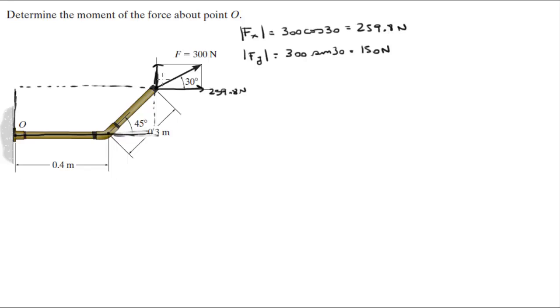Now the sum of the moments around O. First thing you need to do is get the magnitude of the lever arms. Now you know this is 0.4, and you know that this is 0.3 cosine of 45, and this is 0.3 sine of 45.